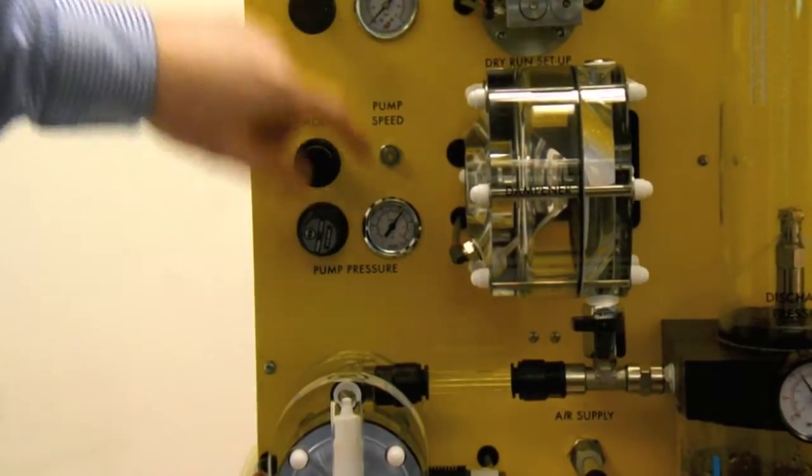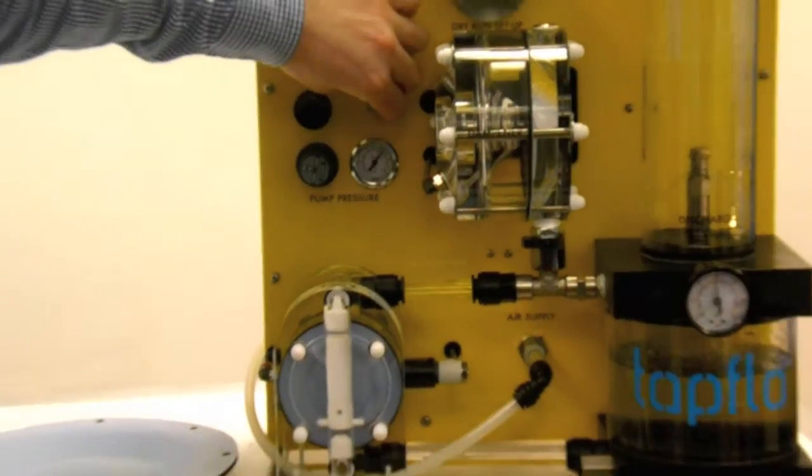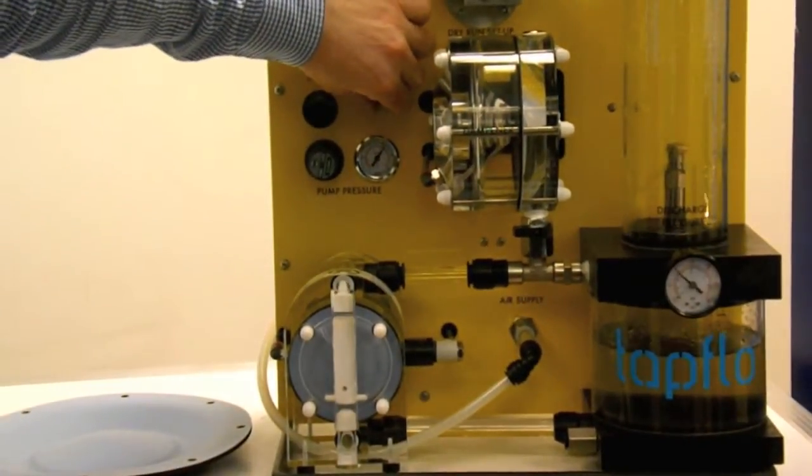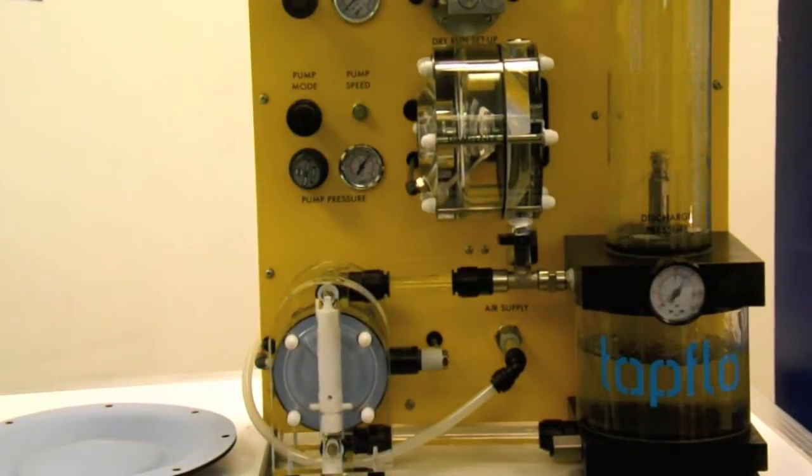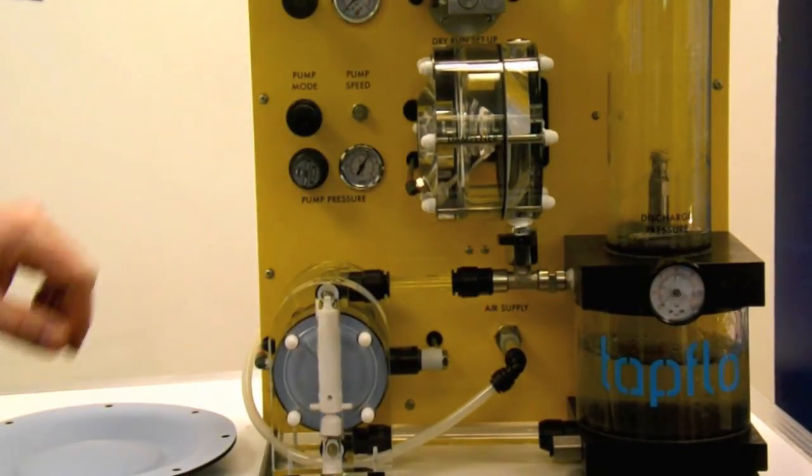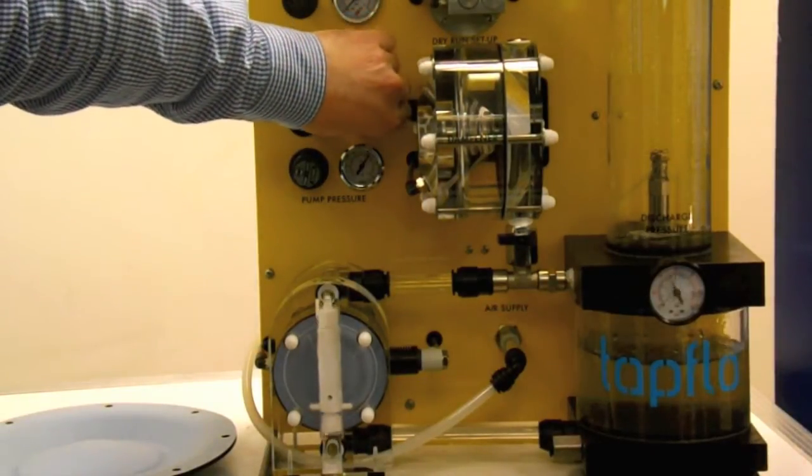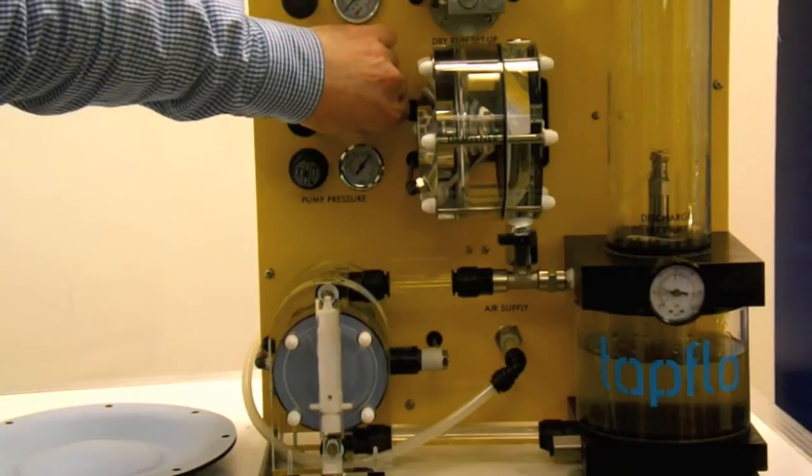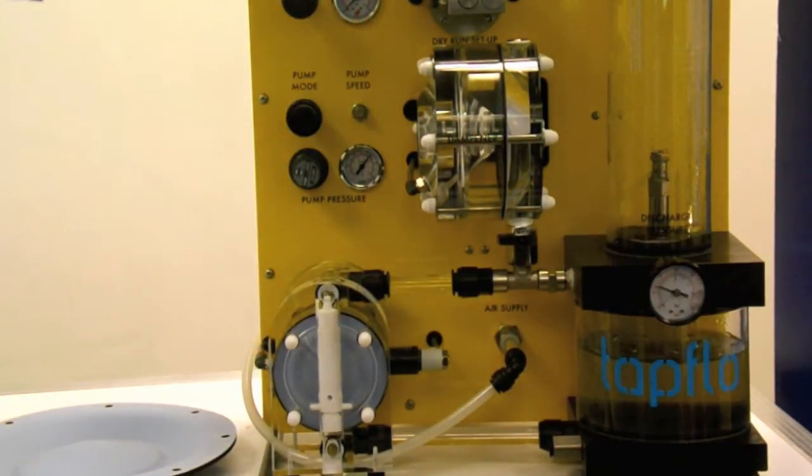You can see here we have the pressure for the pump set just around 5 bar and the pump is running nice and slowly. By opening up the needle valve we can increase the speed and intensity of the pump and by closing the needle valve again we can slow the pump down and have a nice slow speed if we need it.